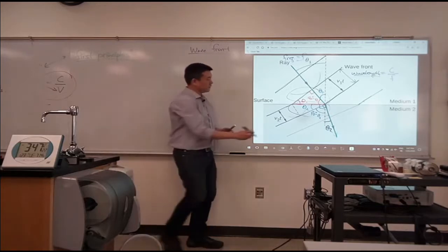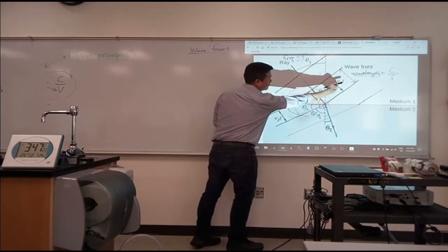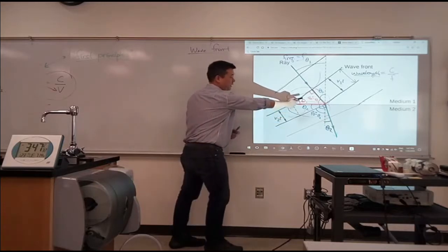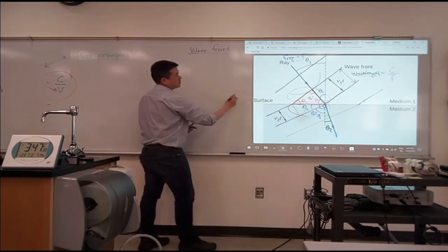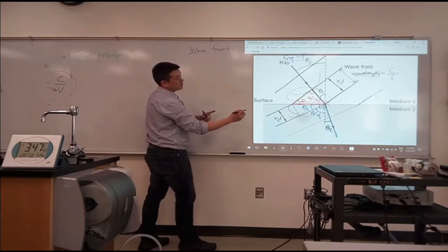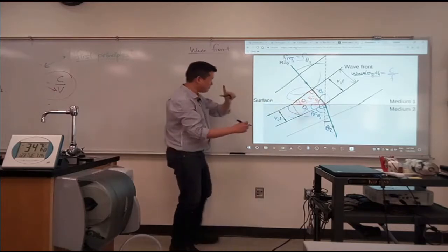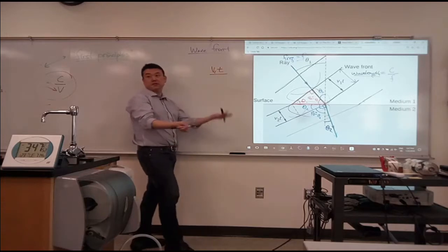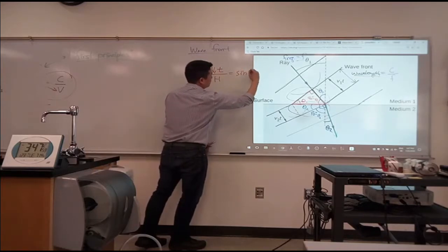So for this right triangle here, I know this leg. That's V1T. And I know one angle here. So I can express the hypotenuse. The hypotenuse here is, so this is the opposite side over hypotenuse. So let me write it down that way. So opposite side, V1T, over the hypotenuse, let me call it capital H, is equal to sine of theta one.